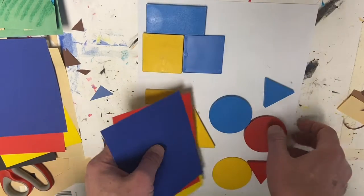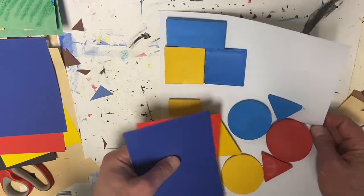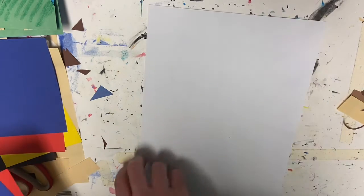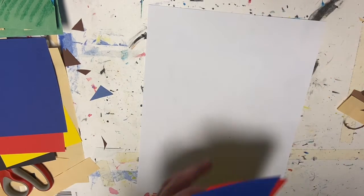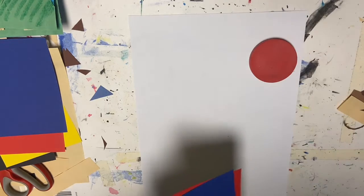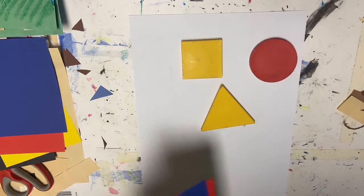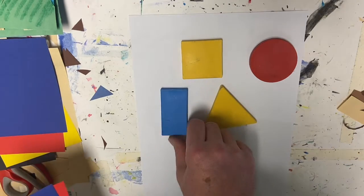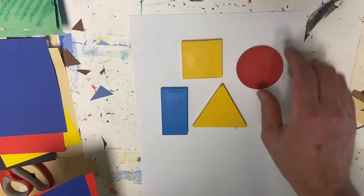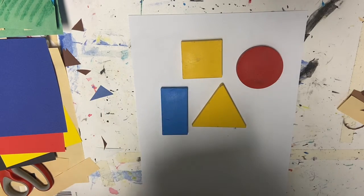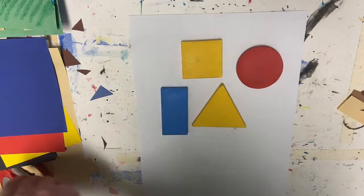I'm putting my shapes to the side. This was just an idea to think about, but I know that I need circles, squares, triangles, and rectangles. Okay, so let's look at these shapes. This is the only round shape we have, the circle.